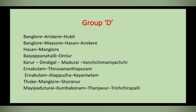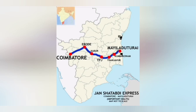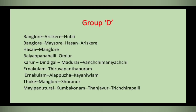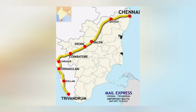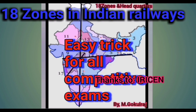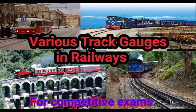Karur to Vanchi Maniyachi and Tiruchirappalli to Mayiladuthurai routes are Group B routes in Southern Railway. Ernakulam to Trivandrum and Ernakulam to Kayamkulam and Shoranur routes are Group B routes. In this map, Chennai to Ernakulam is Group B and Ernakulam to Trivandrum is Group D route. You can find the trick to identify the 18 zones in the railway and various trackages in the description below.